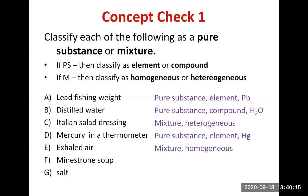Minestrone soup — the Italian soup made of tomatoes, vegetables, white beans, and pasta. You can definitely tell the different parts apart, so that's a heterogeneous mixture.